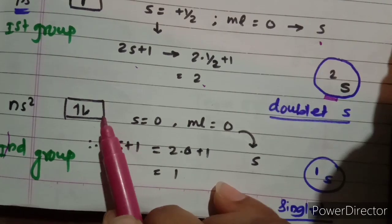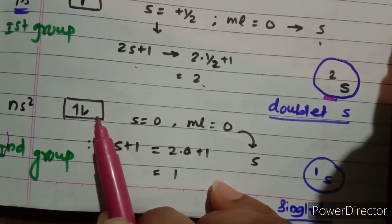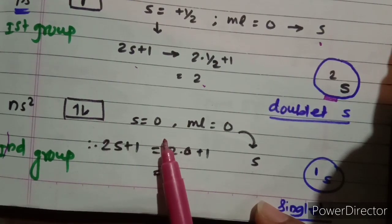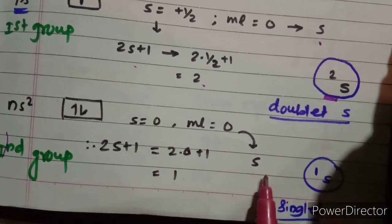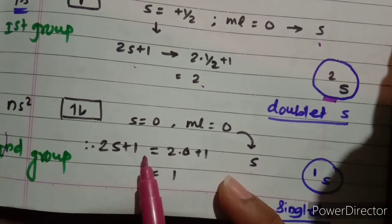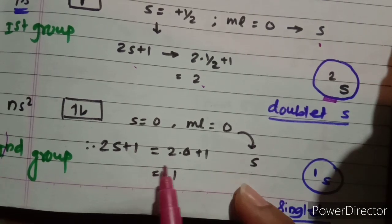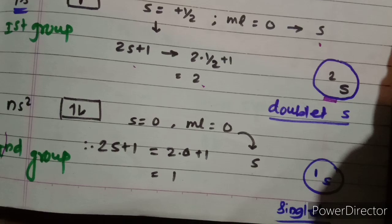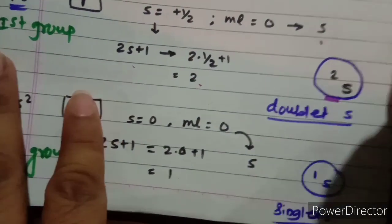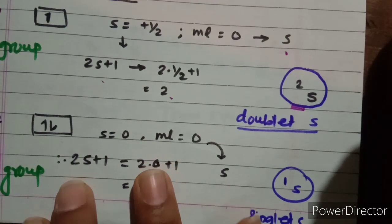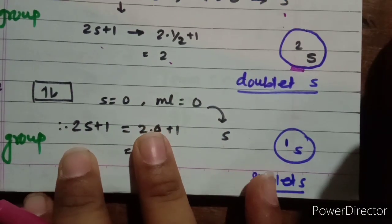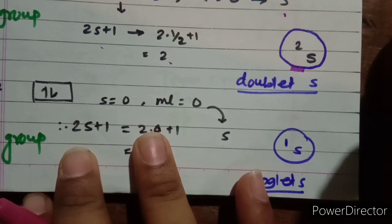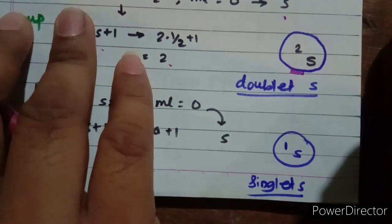For the second group element, ns2, we represent two electrons where S = 0 and ml = 0. The term is S, and 2S+1 = 2×0+1 = 1. This is called 'singlet S,' written as ¹S. So these two — ²S and ¹S — are the term symbols for first-group and second-group elements respectively.